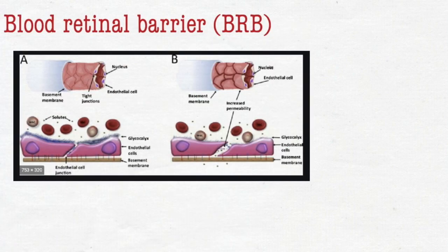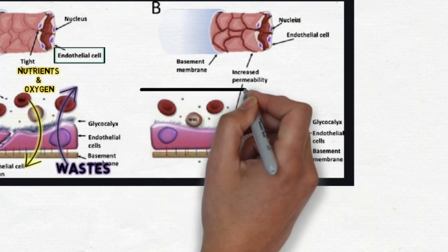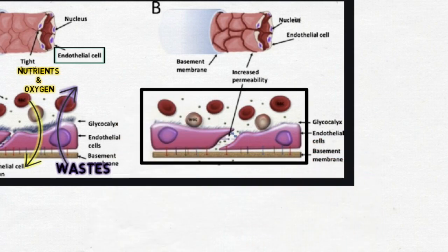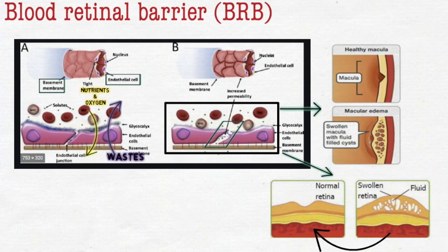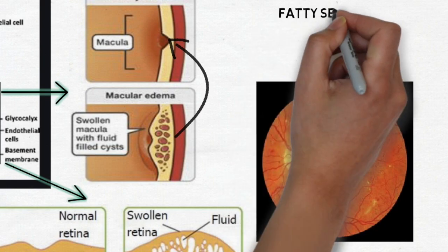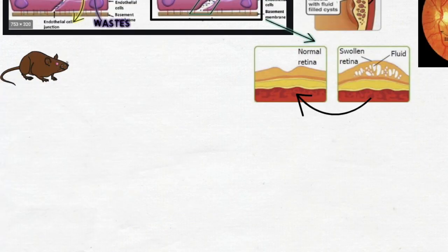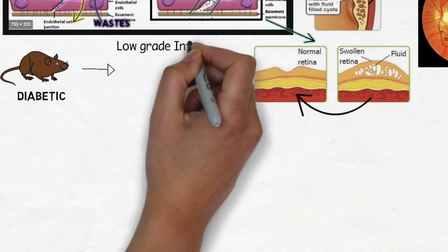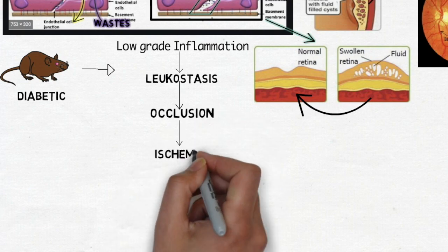The second component is dysfunction of the blood-retinal barrier, formed by endothelial cells and the basement membrane, which controls transportation of nutrients and waste. In diabetes, hyperglycemia damages the endothelial lining and basement membrane, causing increased spillage of fluid, resulting in macular and retinal edema. The body can compensate early by removing excess fluid, but it leaves fatty sediments behind — appearing as waxy yellow deposits called hard exudates. Additionally, low-grade inflammation causes leukostasis, which causes occlusion and ischemia, believed to be secondary to damaged pericytes and endothelial cells.